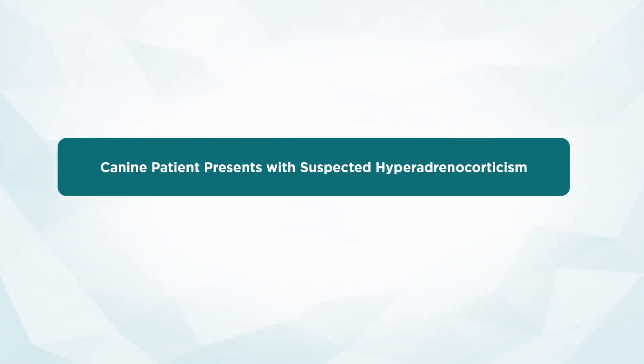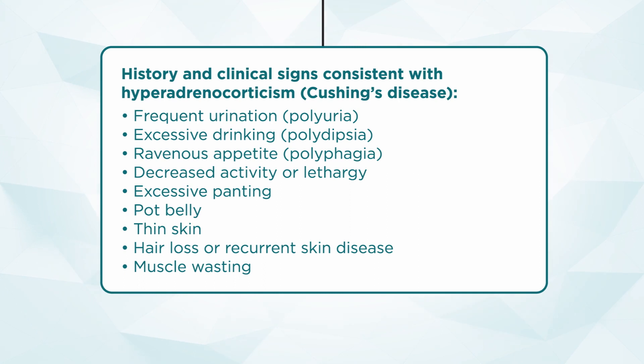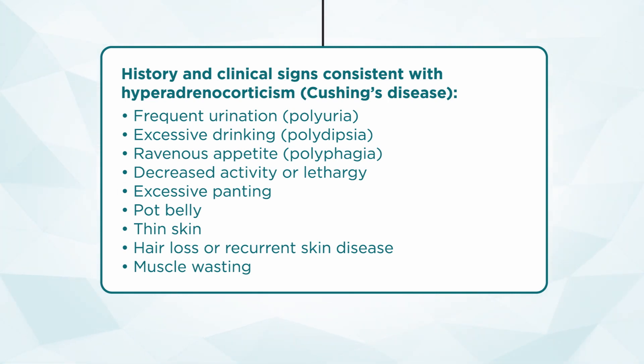First off, we're going to start with the history. The most important thing is that you need to start off with a clinical suspicion of the disease, meaning it's going to have supportive historical or clinical signs very suspicious for hyperadrenocorticism. A lot of these clinical signs have a P in them — they either start with a P or they contain a P, which is an easy way to remember them. So we've got frequent urination or polyuria, excessive drinking or polydipsia, ravenous appetite or polyphagia, decreased activity or lethargy, excessive panting, a pot belly, thin skin, hair loss or recurrent skin disease, and muscle wasting. These are clinical signs that are really going to make you think this dog has Cushing's disease.